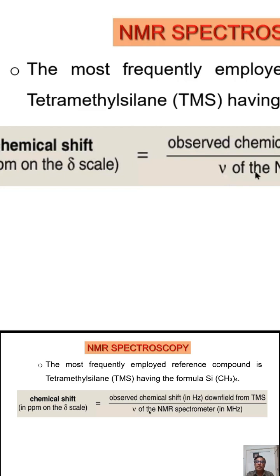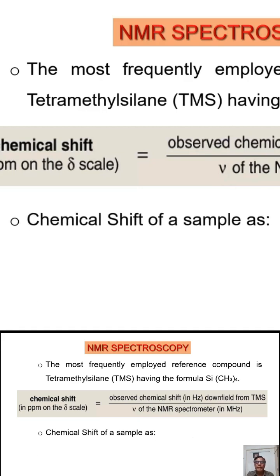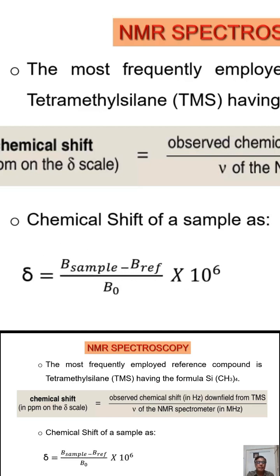I would like to express the equation of chemical shift as: Delta equals B-sample minus B-reference, divided by the frequency of the spectrometer.